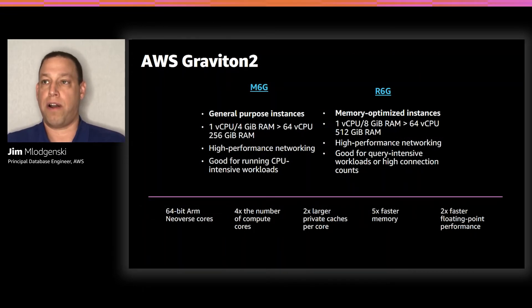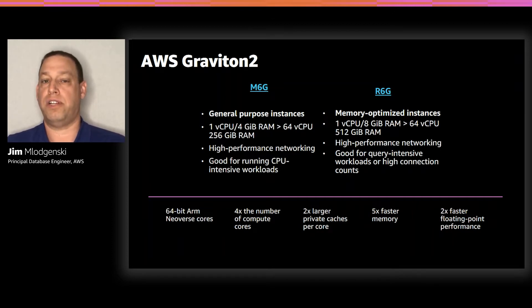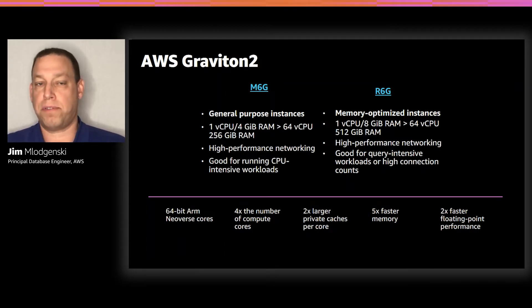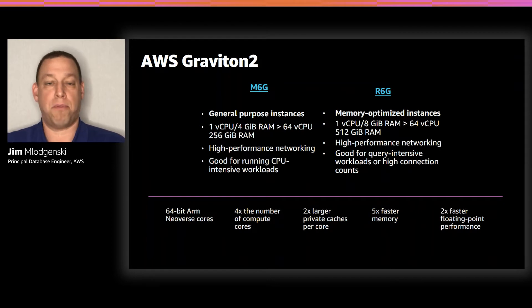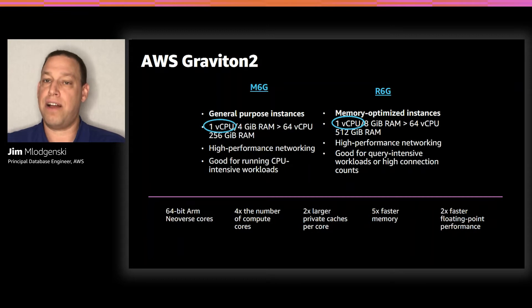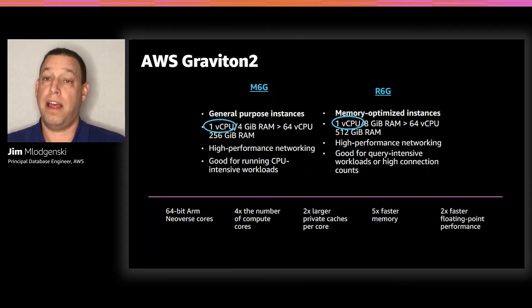With M and R, there's a new generation: the M6G and R6G, which leverage the Graviton2 chips — 64-bit ARM processors. These give you better price performance than their M5 equivalents, with faster CPU scalability by just upgrading or replicating to them. These scale down to a single vCPU, so you can take advantage of the price performance even for smaller applications or dev/test environments.